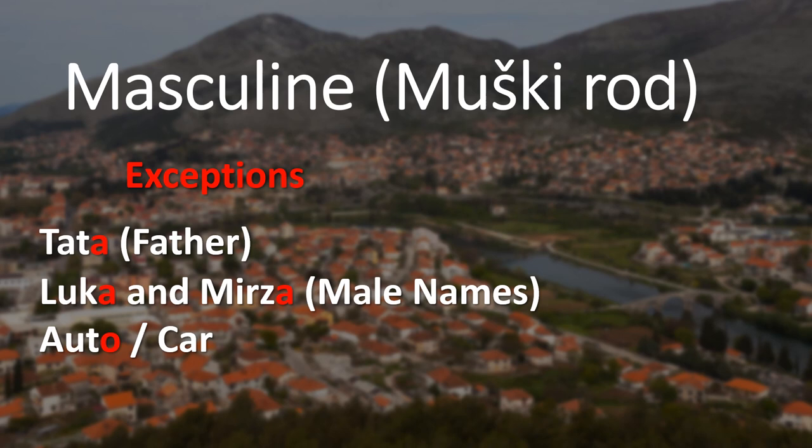There are some exceptions for masculine, or muški rod. Some words end in vowel A — for example, tata, meaning father. Some male names like Luka and Mirza also end in A, but they are still masculine nouns. The last exception is auto, meaning car — it's short for automobile, ends in O, but we still treat it as a masculine word.